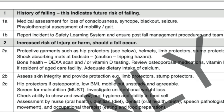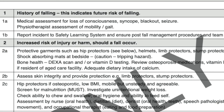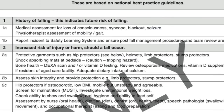For 1B — if the patient had a fall or near miss during the current admission — the action is to report the incident to the Safety Learning System, which is the reporting system in South Australia. In New South Wales, the equivalent is IMS (Incident Management System). Ensure all possible management procedures and team reviews are completed. In the Australian healthcare system, all incidents such as falls or adverse events must be captured and managed properly, as incident reporting is a very important aspect of patient safety.